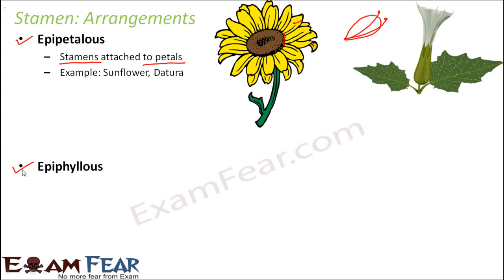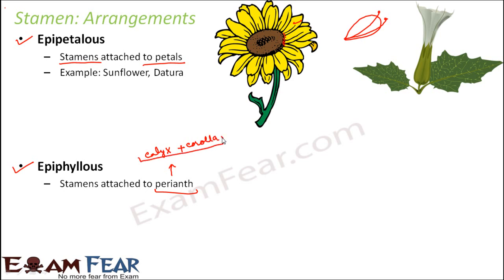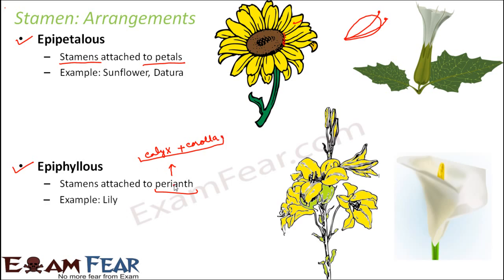The next type is epiphyllous. Here, 'phyllous' relates to perianth — which is calyx plus corolla, meaning sepals and petals together. In epiphyllous flowers, the stamens are attached not only to the petals but also to the sepals, so stamens, petals, and sepals are all attached to each other. An example is lily, where the sepals are not clearly separate because they are all attached together.